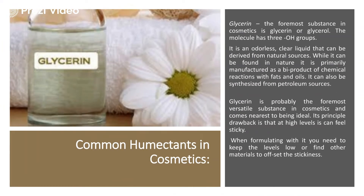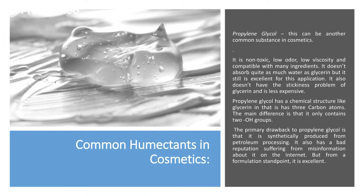Talking about commonly used humectants in cosmetics, glycerin is one of the most widely used cosmetic ingredients. It is basically an odorless clear liquid which can be derived from natural resources. It is found in nature primarily as a byproduct of chemical reactions with fats and oils, and it can also be synthesized from petroleum sources. Glycerin is probably the foremost versatile substance in cosmetics, but its principal drawback is that it is highly sticky. So when formulating with it, you need to keep it at low levels or find other materials to offset the stickiness. Another humectant used in place of glycerin because of its stickiness is propylene glycol — it is non-toxic, low odor, low viscosity, and compatible with many ingredients.